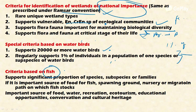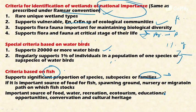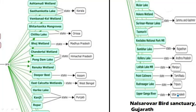On the basis of fish criteria, a wetland can be declared of national importance if it supports a significant proportion of indigenous fish species, subspecies, or families. Additionally, if the wetland acts as an important source of food, water, recreation, ecotourism, educational opportunities, conservation, or cultural heritage — fulfilling all these important functions — that wetland can be considered a Wetland of National Importance.